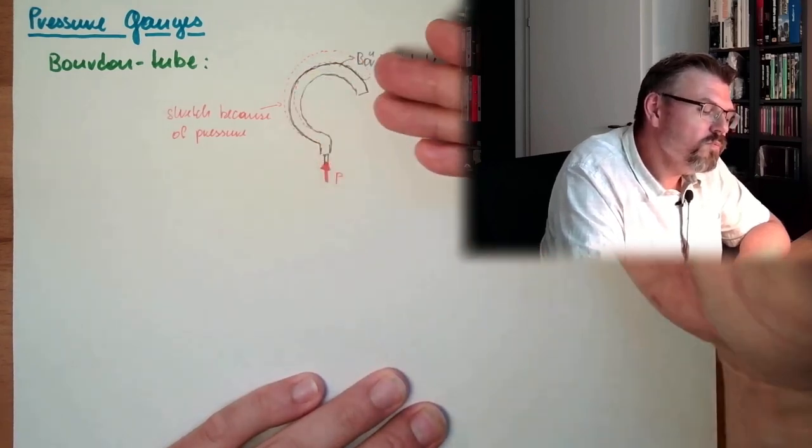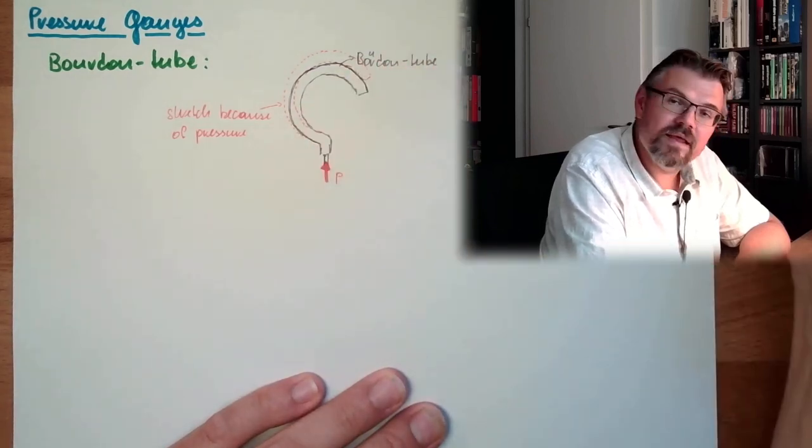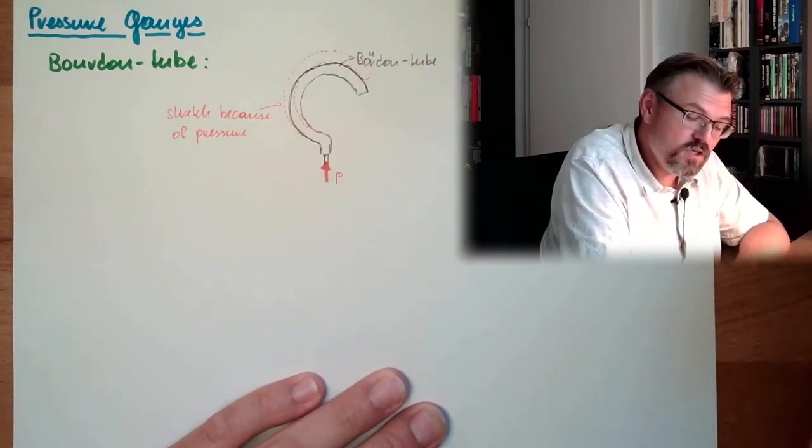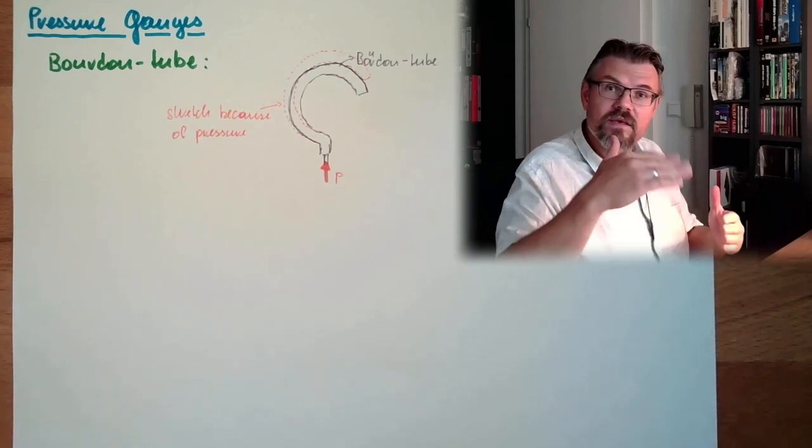So this Bourdon tube here is this elastic thing, which is deformed by the pressure. And this deformation needs to be indicated somehow on a scale.